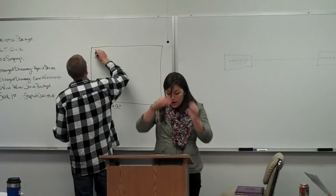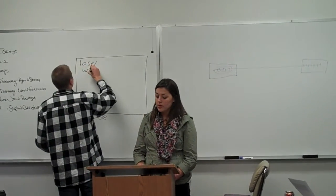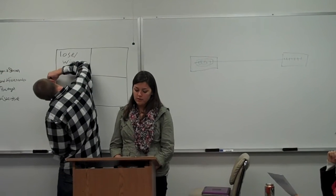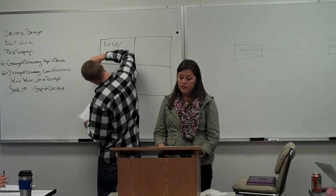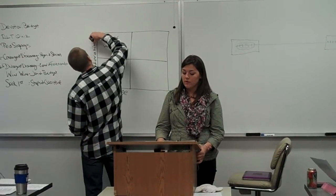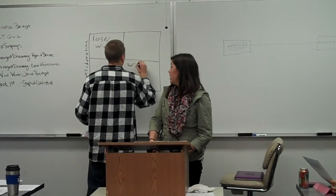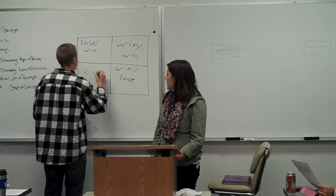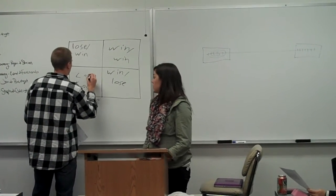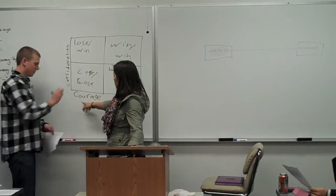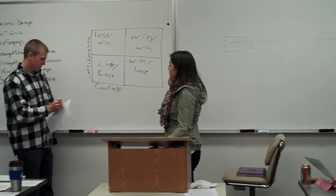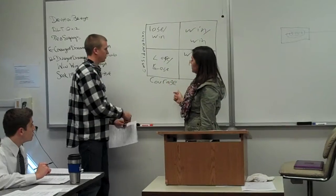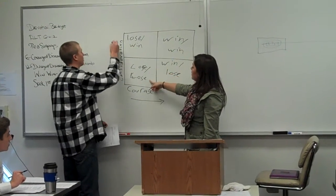Maturity is the balance between courage and consideration — John is drawing the graph for this. There's a quote from Saxonian cited by Covey: 'The ability to express one's own feelings and convictions balanced with consideration for the thoughts and feelings of others.' As you can see on the graph, consideration is on the y-axis and courage is on the x-axis, mapping to lose-win, win-win, lose-lose, and win-lose.